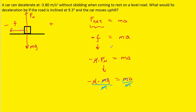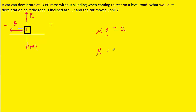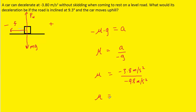That leaves us with negative mu times g equal to the acceleration. We can solve for mu by dividing both sides by negative g, giving us mu equal to the acceleration divided by negative g. The question gives us an acceleration of negative 3.8 m/s² on a level road, and gravity is 9.8 m/s². Dividing these out, we get a coefficient of friction of about 0.388. This is not the final answer, but we'll hold on to that value and look next at the incline.